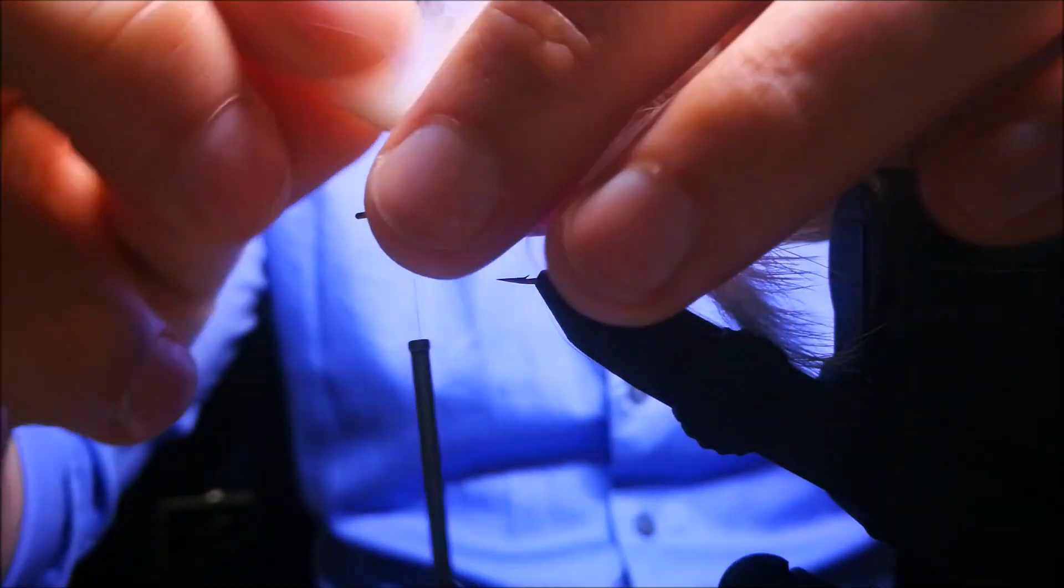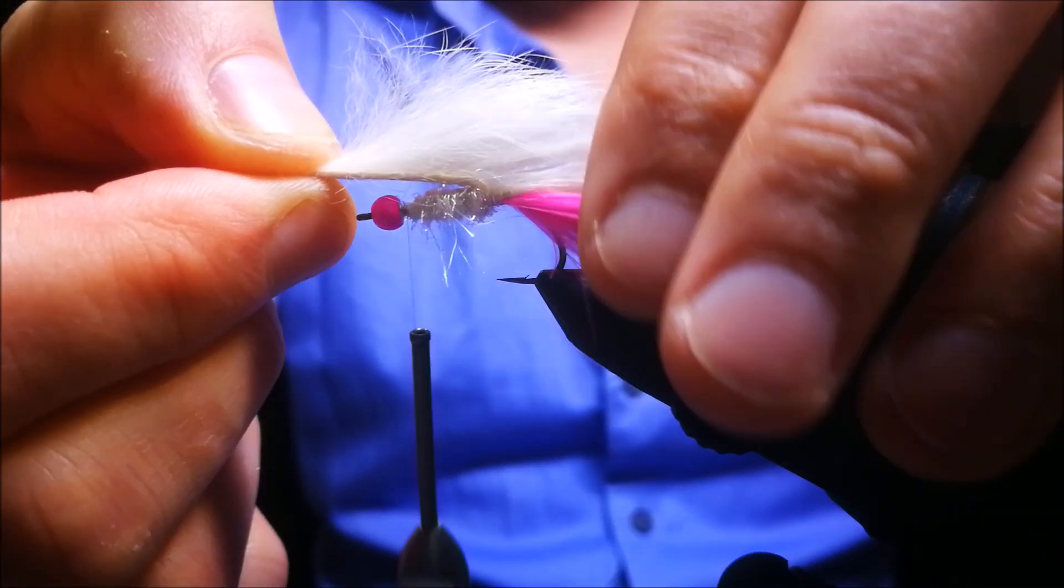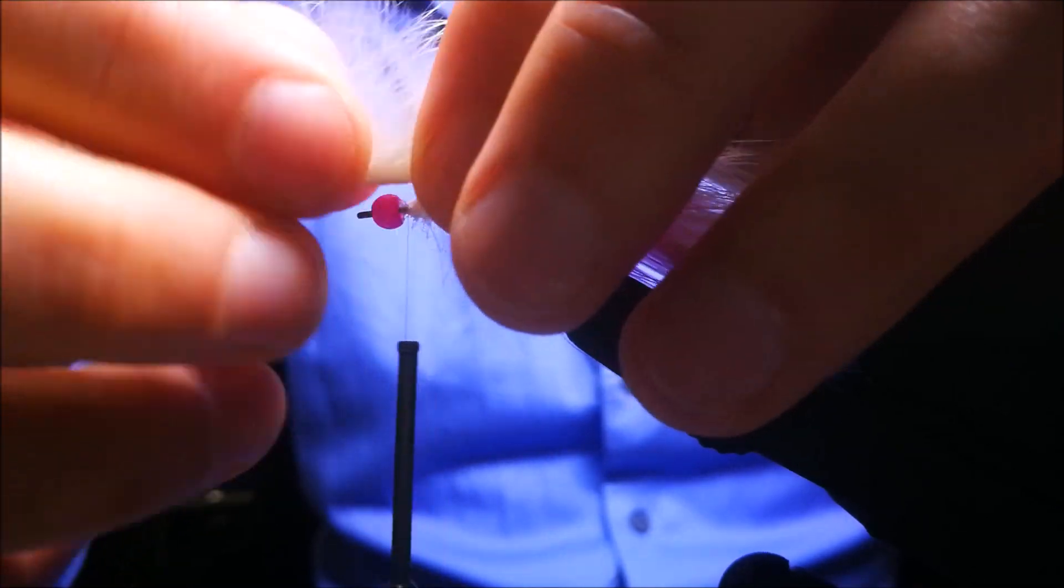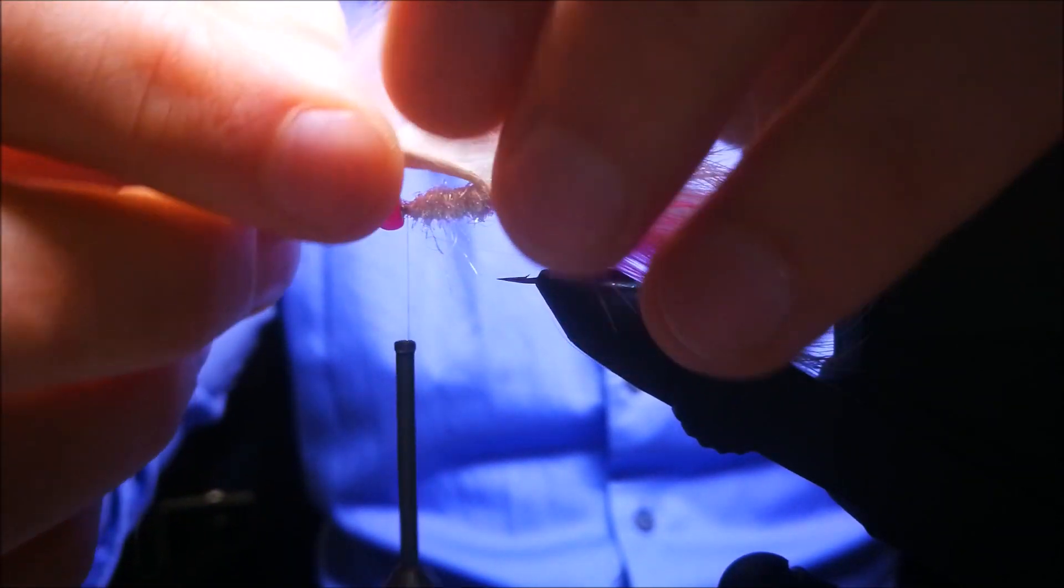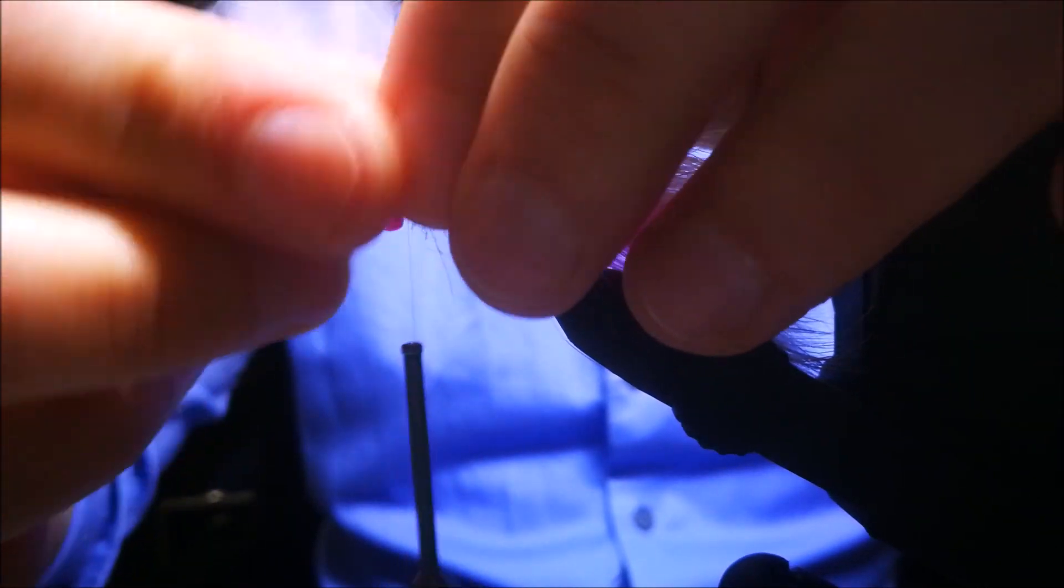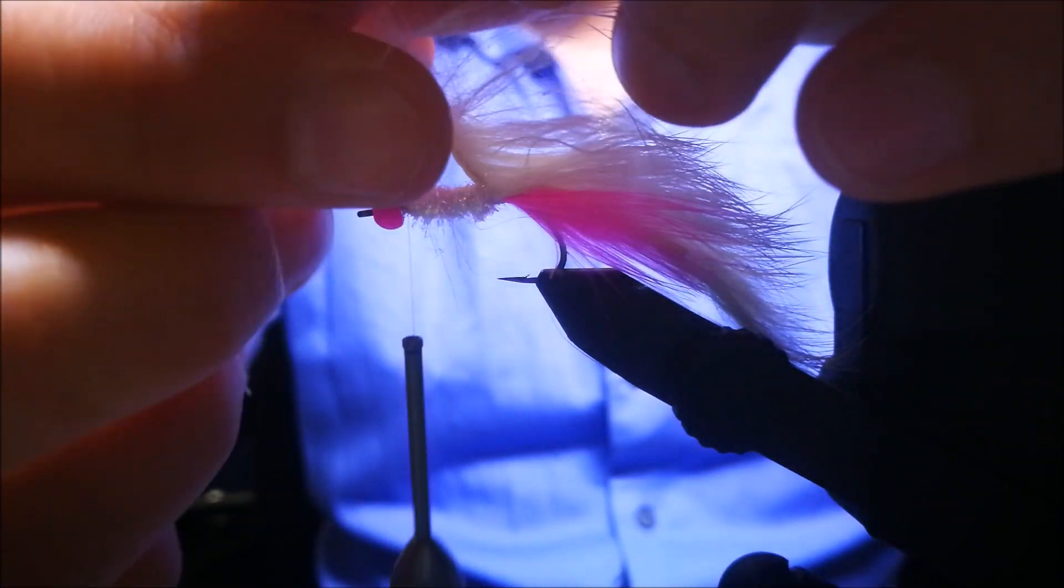Now you can pull the sunker strip forward. Measure it to where the bead is and pull those fibers forward because you don't want them tied down, that will make a too bulky head. So when you have folded them forward,